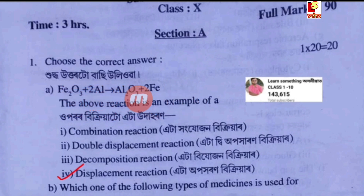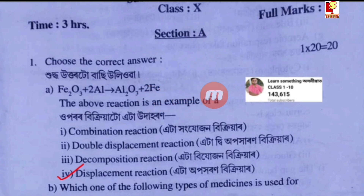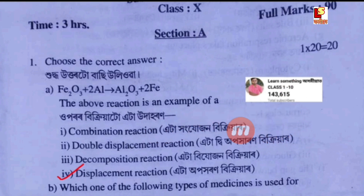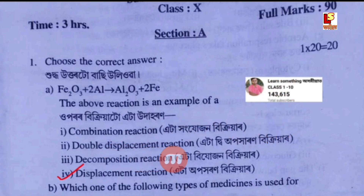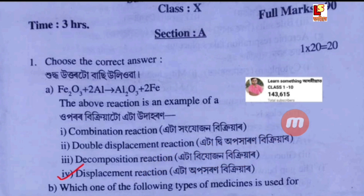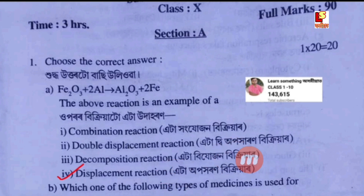Fe2O3 + 2Al → Al2O3 + 2Fe. Option A: combination reaction. Option B: double displacement reaction. Option C: decomposition reaction. Option D: displacement reaction.